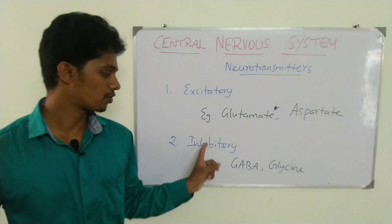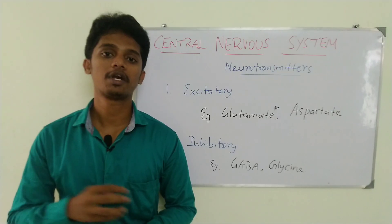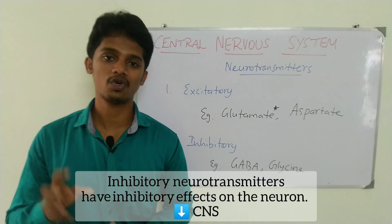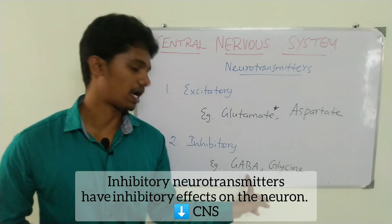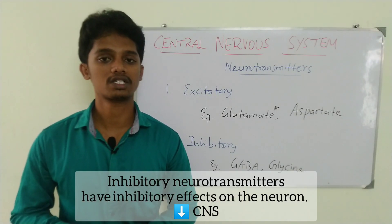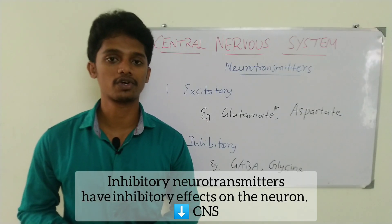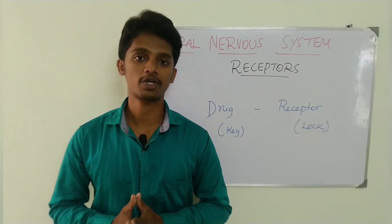Next, the Inhibitory Neurotransmitter. In the CNS, it causes block or inhibition. For example, GABA — it is the principal Inhibitory Neurotransmitter. There is also Glycine, another Inhibitory Neurotransmitter in the CNS.